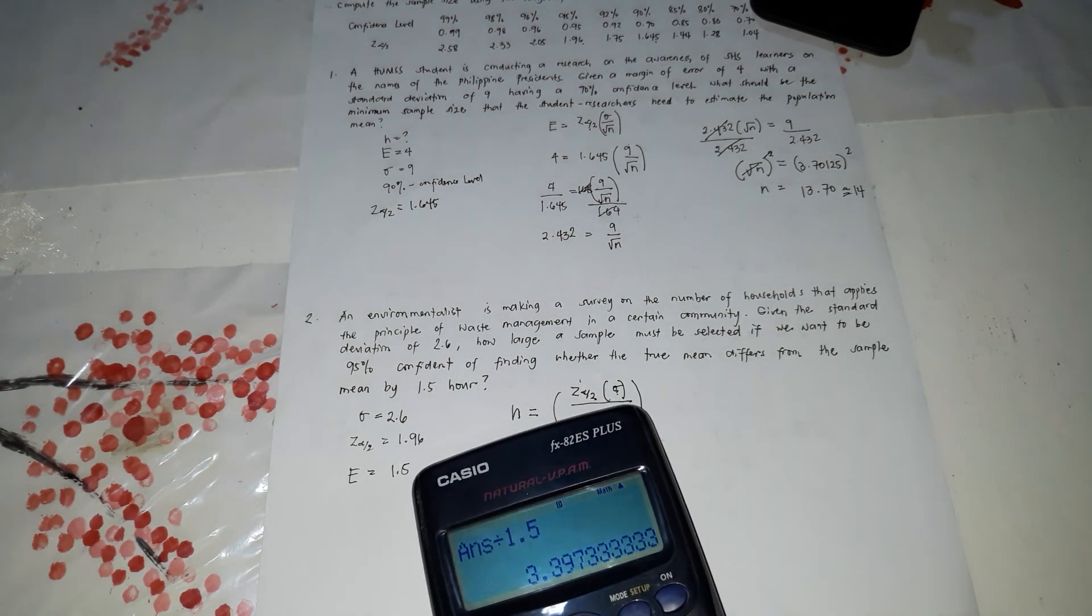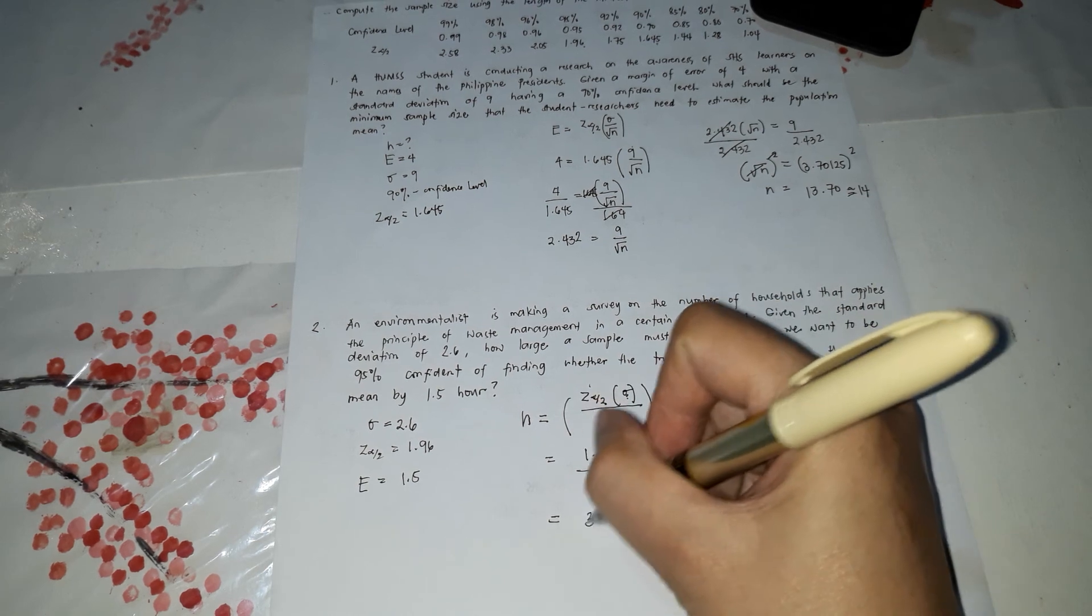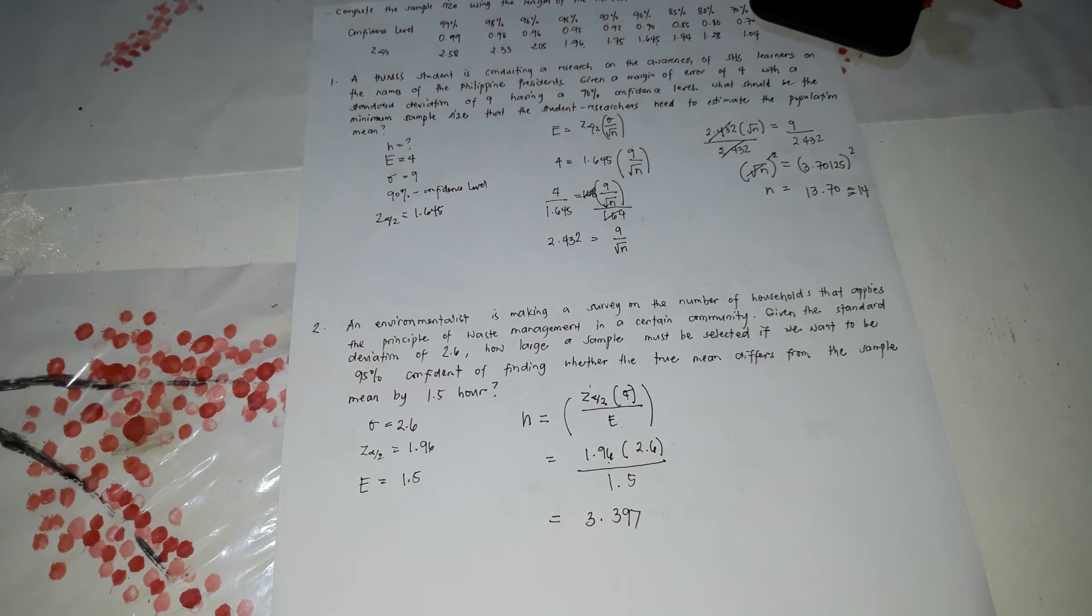It's easier actually. 1.96 times 2.6 divided by 1.5 equals 3.397. So that's 3.397.